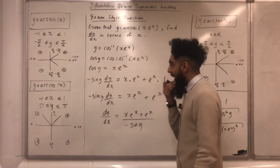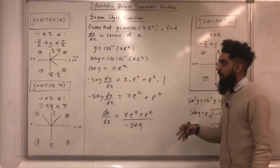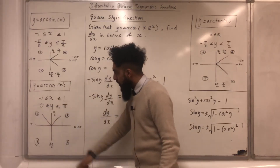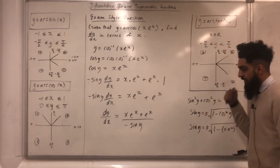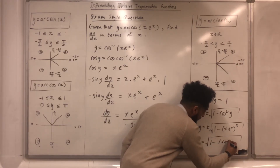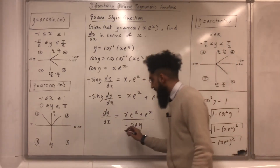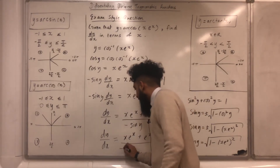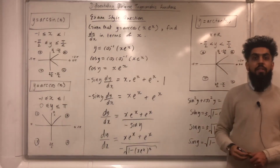To decide the sign, I go back to the range of y equals arc cos, which is 0 to pi. The y value falls in the first or second quadrant where sin is positive, so I take the positive square root: sin y equals square root of 1 minus (x e to the power x) squared. Substituting this in gives dy/dx in terms of x.